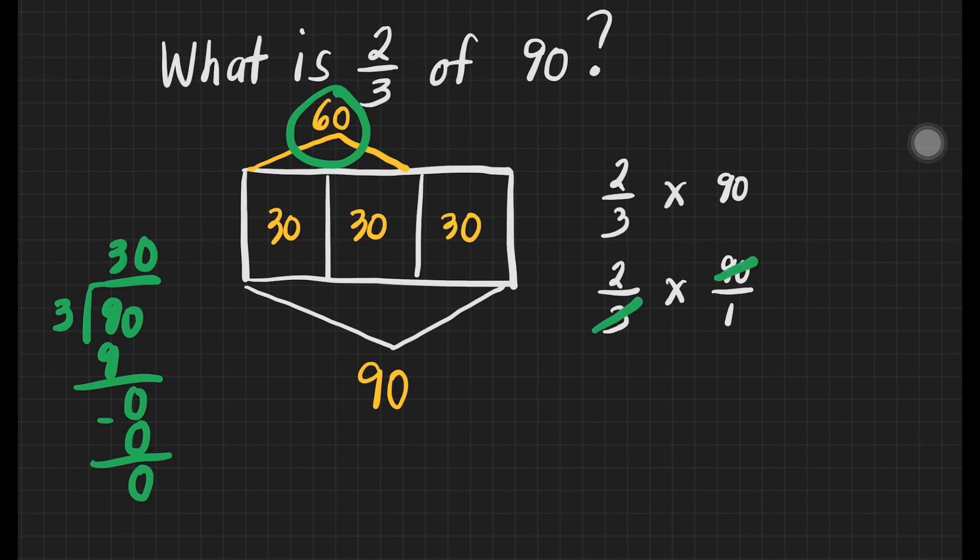What number can we divide? 90 and 3. That's 3. This 3 divided by 3 is equal to 1. 90 divided by 3 is equal to 30.